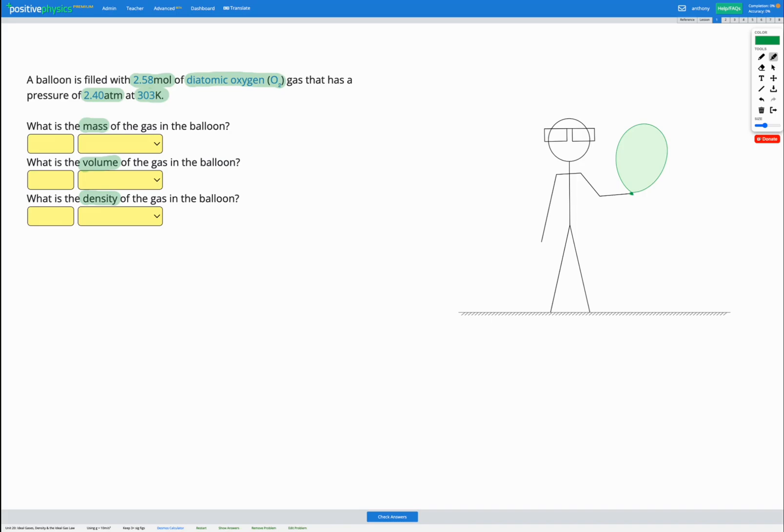So our first step, finding the mass. Now we've been given the moles and we've been told the type of gas that we have, so we can use those to figure out the mass of gas in the balloon. Let's head to our reference sheet.